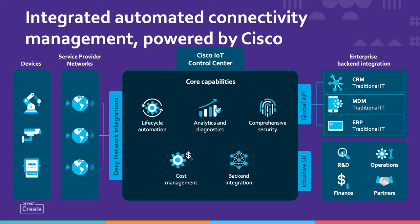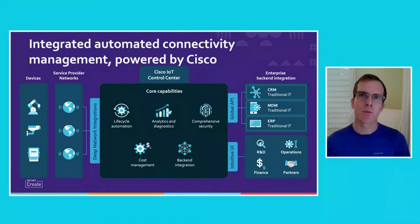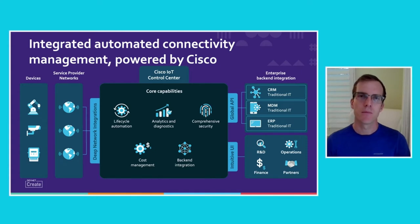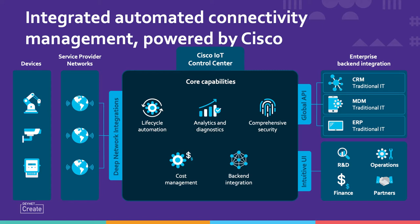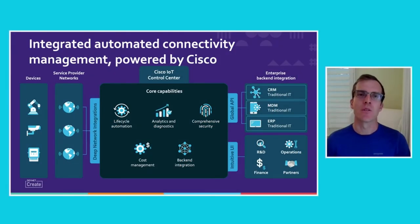The second big area for us is analytics and diagnostics. Those deep network integrations provide a lot of data on your devices and the network they're connected to. We can surface this data to provide diagnostics, allowing you to troubleshoot and remediate any connectivity issues much faster than you would otherwise. Our analytics provide visibility into those connectivity issues as well as your data usage, so you can better manage those devices and your costs. On the security front, we offer comprehensive security at multiple different levels — at the device level through things like IMEI allowlisting, so your device can only interact with certain other systems. We also offer cloud security in our platform itself and security through automation, with automation engines that allow us to set device rules, control device behavior, and set up alerts so you can catch issues early on.